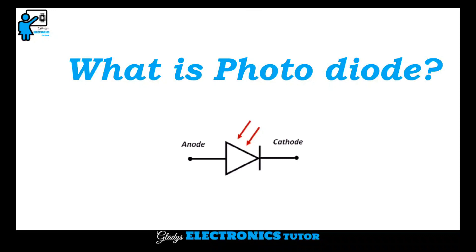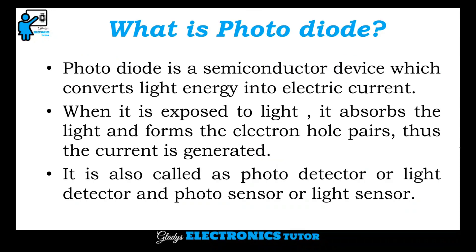What is photodiode? Photodiode is a semiconductor device which converts light energy into electric current. When it is exposed to light, it absorbs the light and forms the electron hole pairs. Thus, the current is generated.